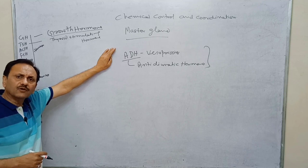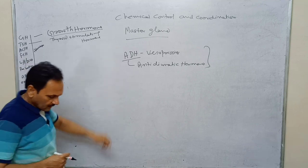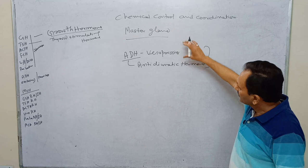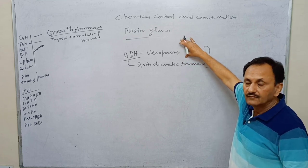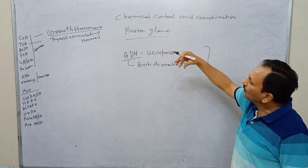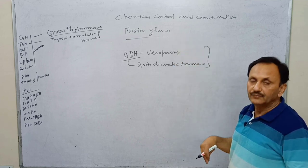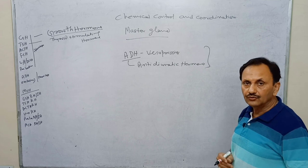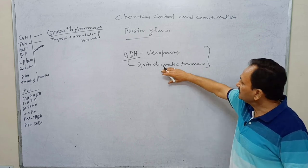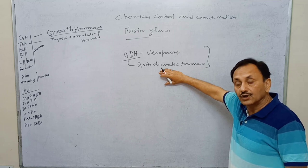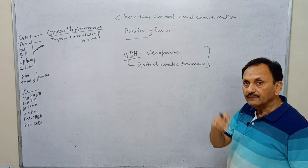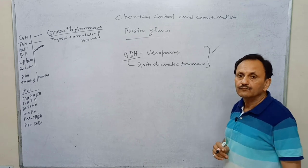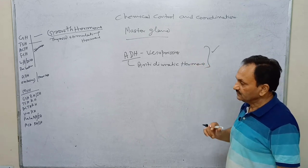ADH is mainly responsible for controlling our osmotic pressure. Whenever urine formation takes place — after glomerular filtration, as the filtrate moves through the PCT, loop of Henle, and DCT, and ultimately becomes urine — during this phase, ADH is responsible for controlling the quantity of water and minerals reabsorbed. So we can say it is mainly responsible for controlling our osmotic pressure.